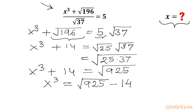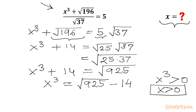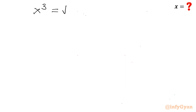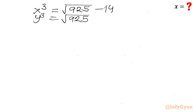Now I can impose one condition on x. Since x³ = √925 − √196 and √925 > √196, x³ is always greater than 0, so for real x we accept only positive solutions. Let me also consider y³ = √925 + 14.